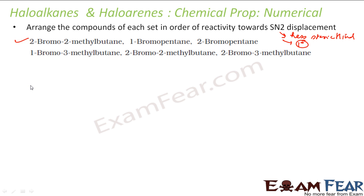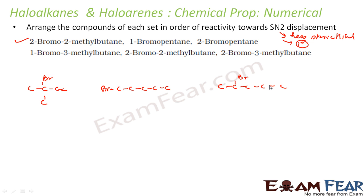Let's draw 2-bromo-2-methylbutane — butane with bromo and methyl at the second position. Then 1-bromopentane (bromine at C1), and 2-bromopentane (bromine at C2). The alpha carbon of 2-bromo-2-methylbutane is 3°, for 2-bromopentane it's 2°, and for 1-bromopentane it's 1°. Since 1° is best for SN2, the order is: 1-bromopentane (1st) > 2-bromopentane (2nd) > 2-bromo-2-methylbutane (3rd). For SN1, just reverse this order.